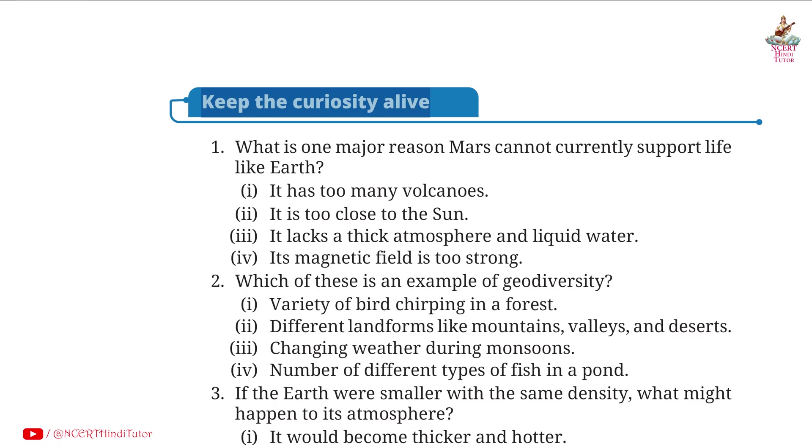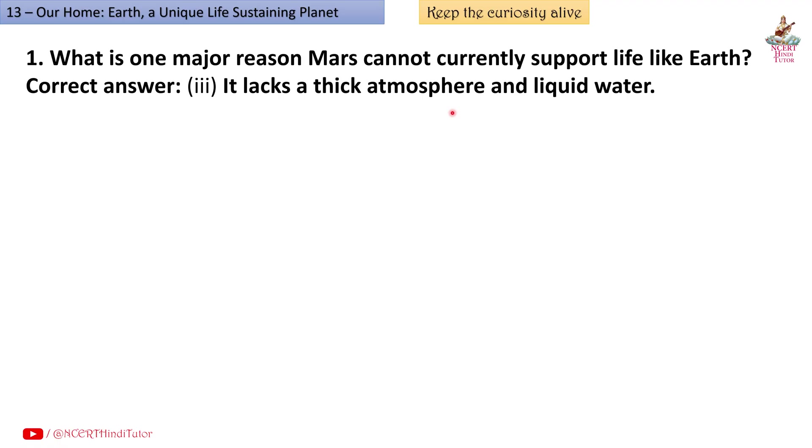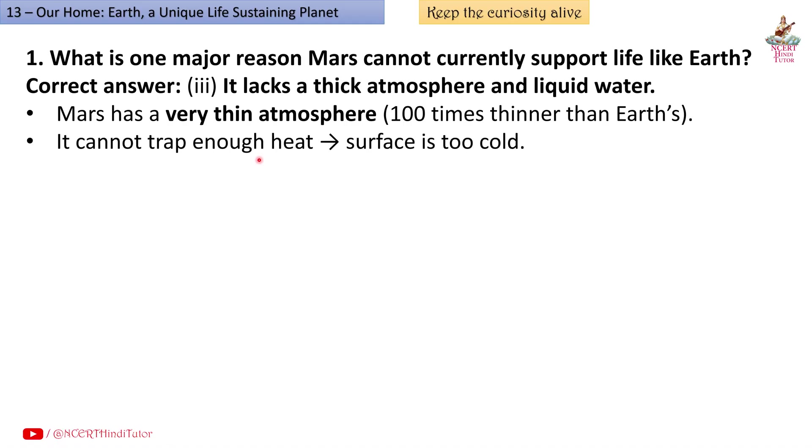Next, keep the curiosity alive. Question 1: What is one major reason Mars cannot currently support life like Earth? Answer: Third, it lacks a thick atmosphere and liquid water. Mars has a very thin atmosphere, 100 times thinner than Earth's. It cannot trap enough heat. Surface is too cold. Liquid water cannot exist stably on its surface today.